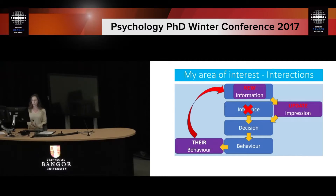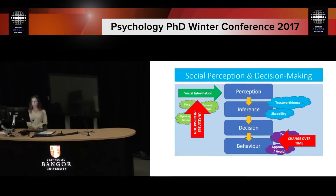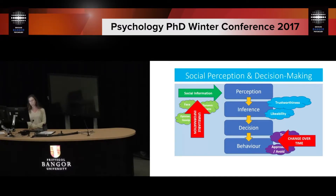I'm looking at the effects of experience and learning over time and how that might change our behaviour. We can do that by providing social information that through experience turns out to be unreliable, and we will then measure if people are able to actually change their behaviour over time to reflect their experience and not the original social impression.